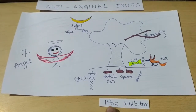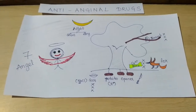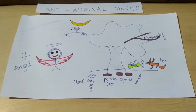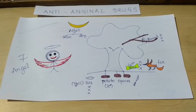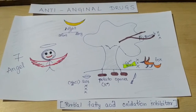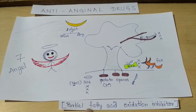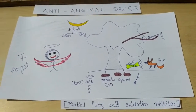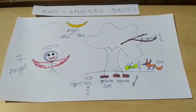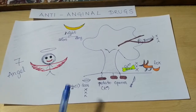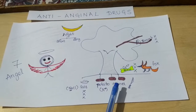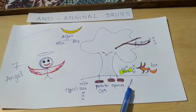The pFOX inhibitor — the full form is: this Fox is partially fat, so the drug is partial fatty acid oxidation inhibitor. FOX: F is fatty acid, O is oxidation. So it is the partial fatty acid oxidation inhibitor.